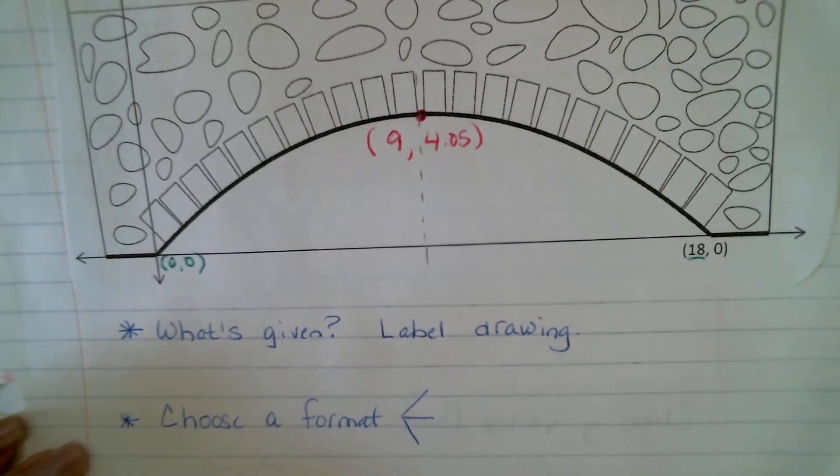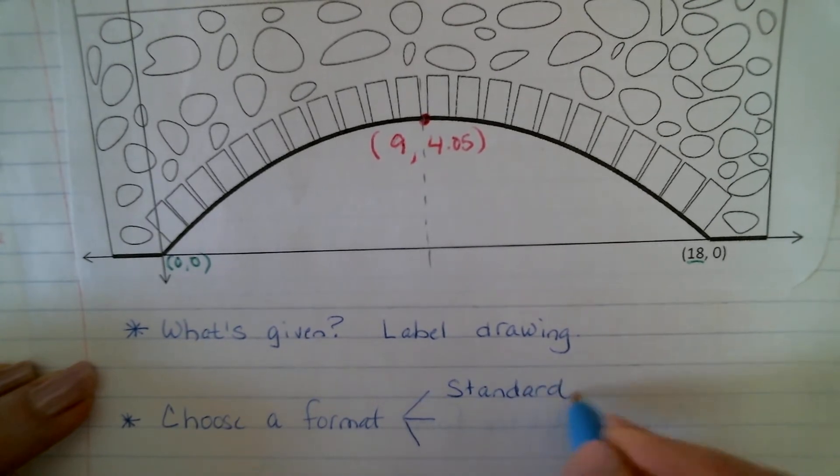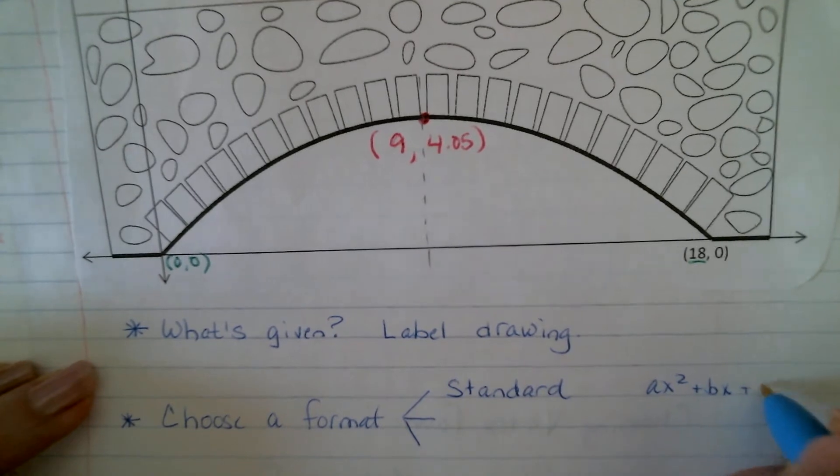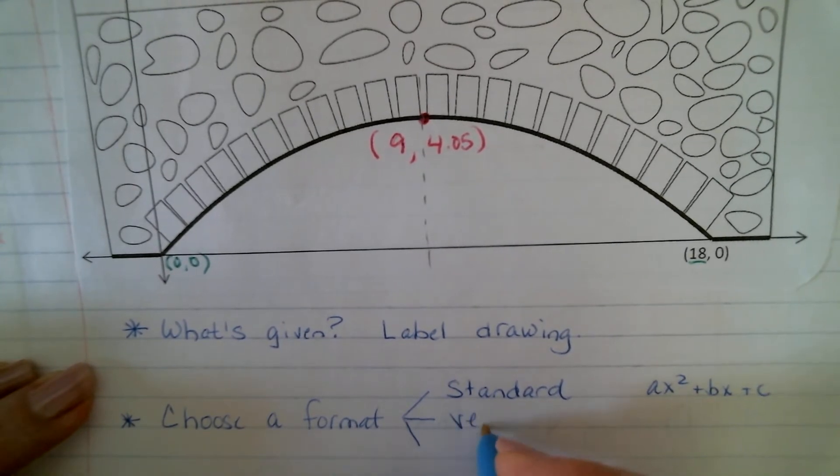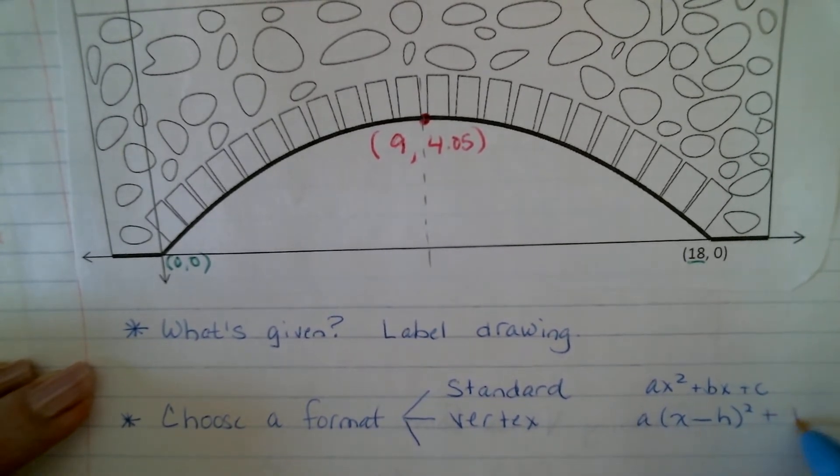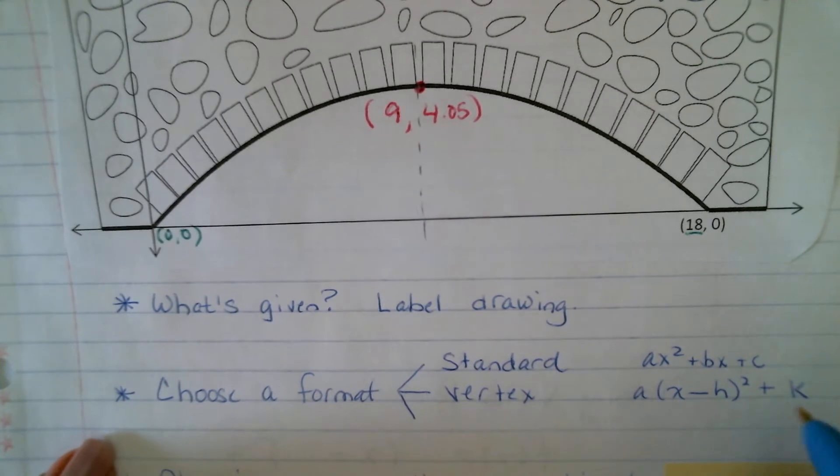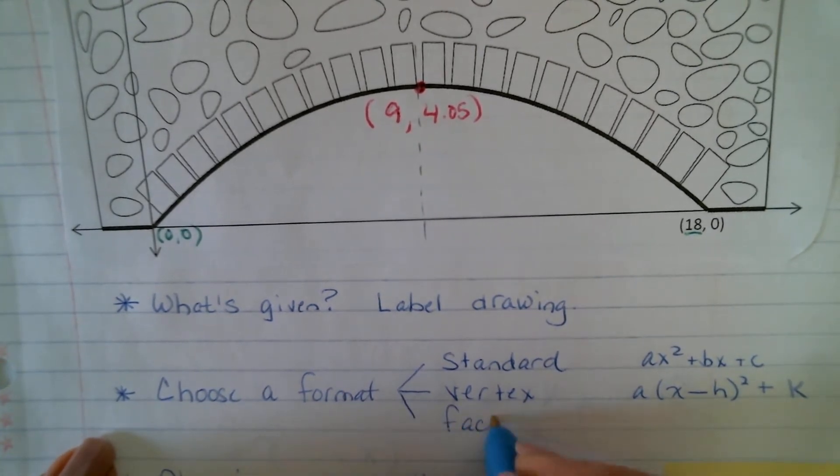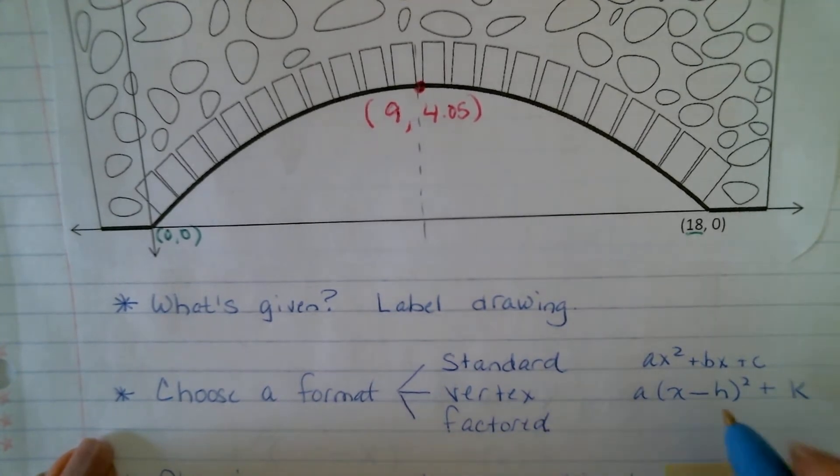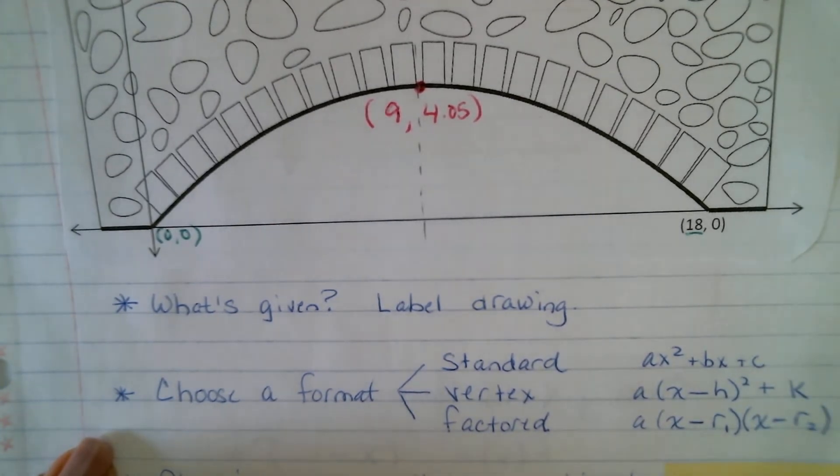Well, what are those formats that I can choose from, right? Well, we could write it in standard, which, remember, is that ax squared plus bx plus c. We could write it in vertex, which is a times x minus h squared plus k, where this digit and this digit would tell me the x and the y value of the vertex. And we could write it in factored form, which gives me those x-intercepts or roots or zeros, right? And, again, when this is subtraction, this digit is one of the roots. And when it's subtraction, this digit is the other root, okay?